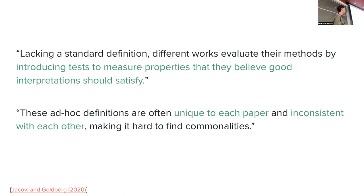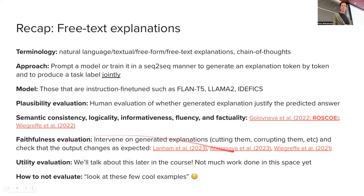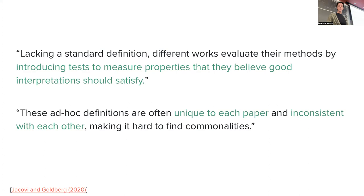I want to make a note on faithfulness. Different works evaluate methods by introducing their own tests, and this is something we see a lot with free text explanations — three different papers each use a different suite of interventions, and none of them combines what was proposed before into one big suite of faithfulness tests. At the time of one key paper, it was even hard to find commonalities between them. That paper identified at least some properties that faithfulness tests should have.